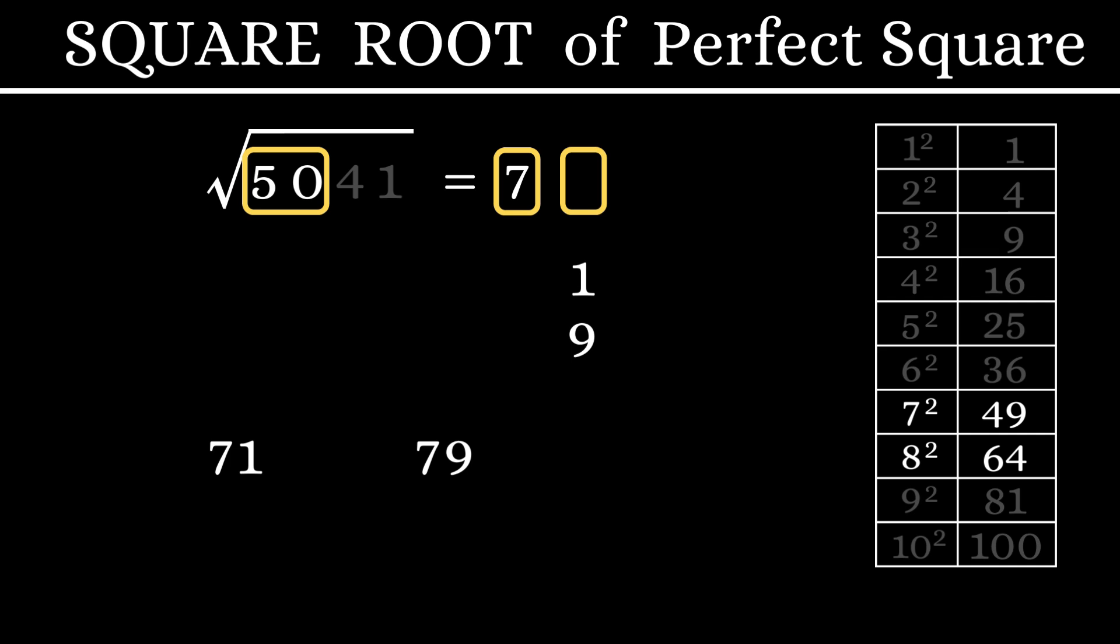To find that out, let's multiply this number 7 with the next consecutive number 8. 7 into 8 is 56. Since 50 is less than 56, our answer should be the lesser number 71. Square root of 5,041 is 71.